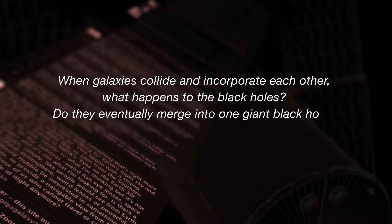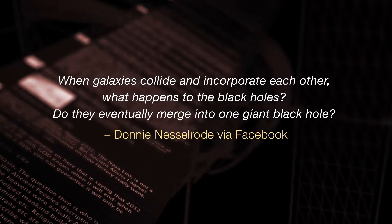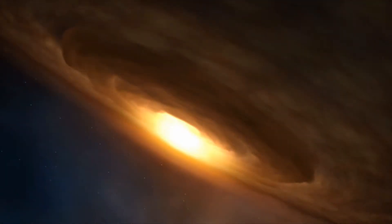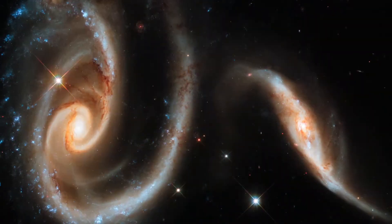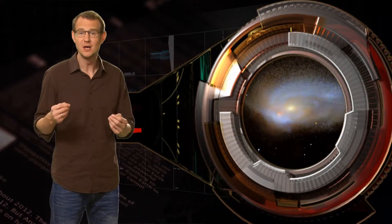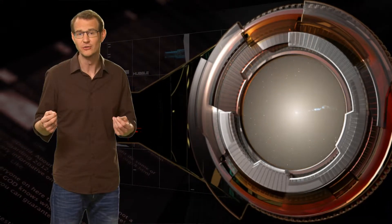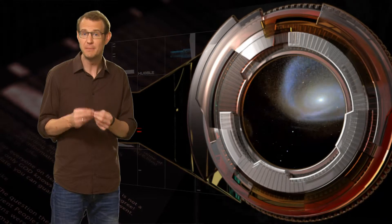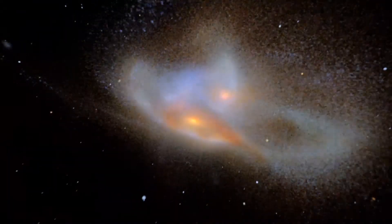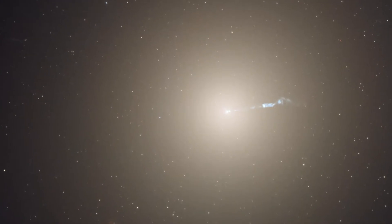When galaxies collide and incorporate each other, what happens to the black holes? Do they eventually merge into one giant black hole? Yep, that's pretty much what happens. As Hubble helped us discover in the 1990s, we think that almost all giant galaxies contain a central supermassive black hole. In addition, galaxy collisions are very common. They happen all the time, and again Hubble has shown us lots of great images of these collisions. Now eventually, the two galaxies merge and settle into a single, bigger, new galaxy. And during this process, the same thing happens with the supermassive black holes. They merge into a single, even bigger, supermassive black hole at the centre of the new galaxy. Now astronomers have made computer simulations of how this process works, but we also have some pretty good observational evidence that this process really does take place.